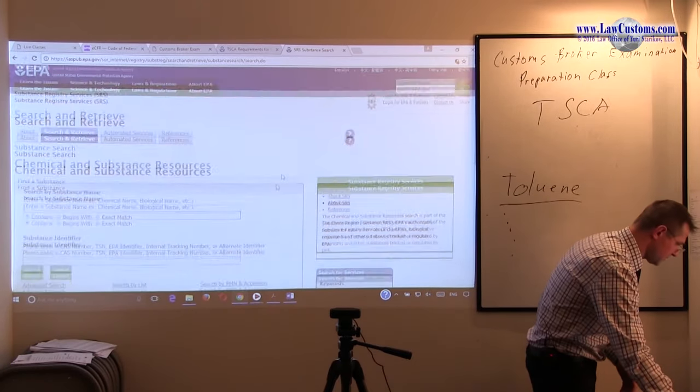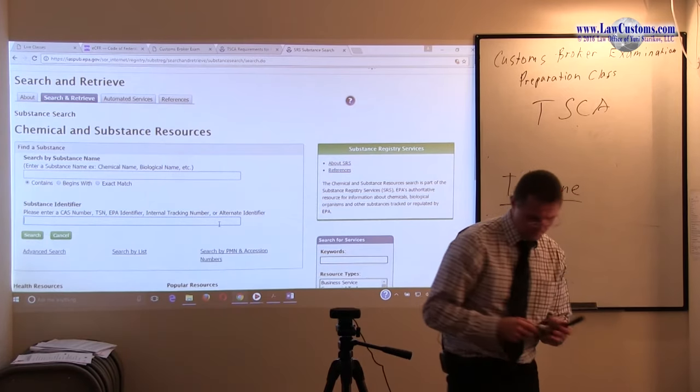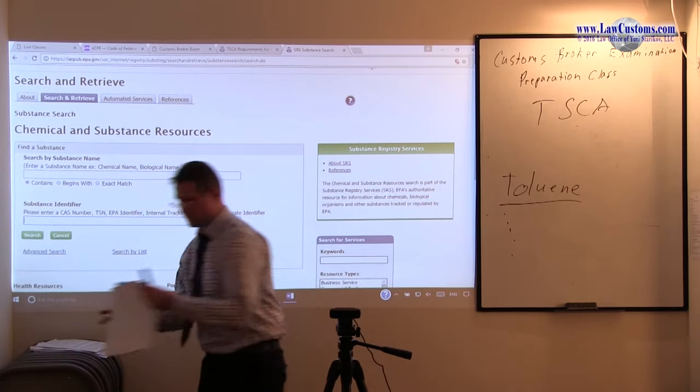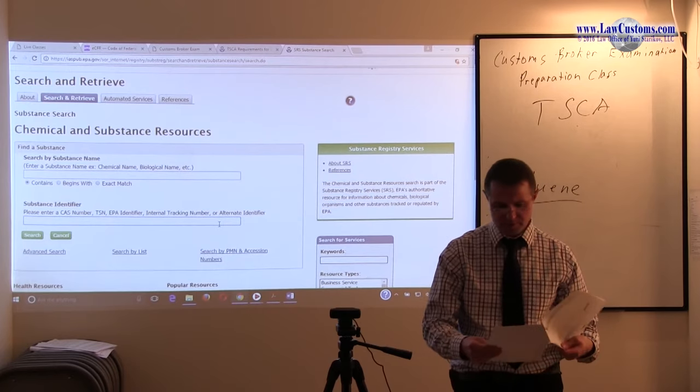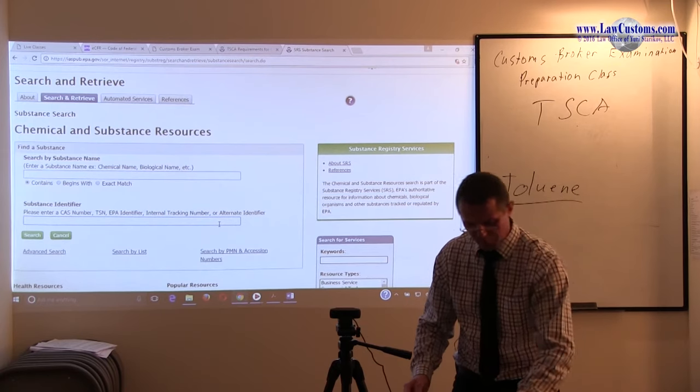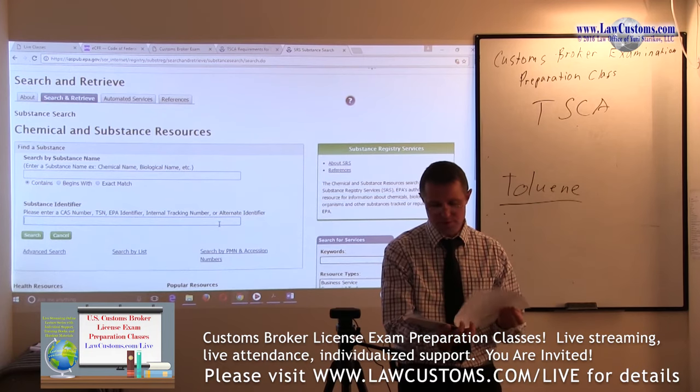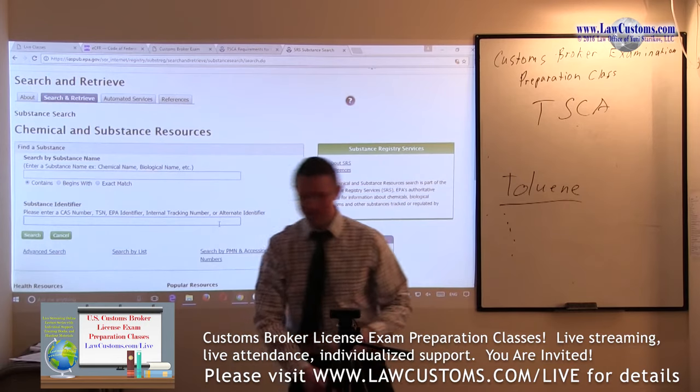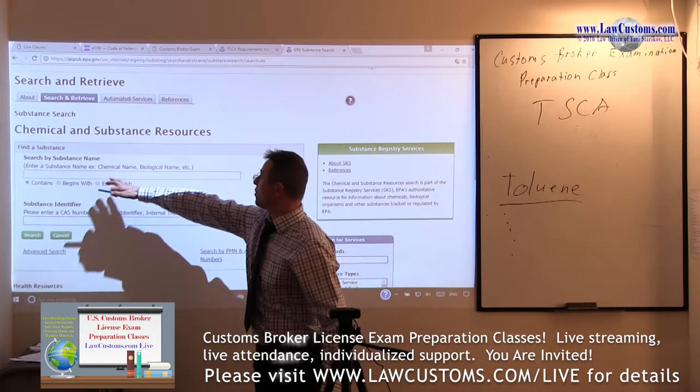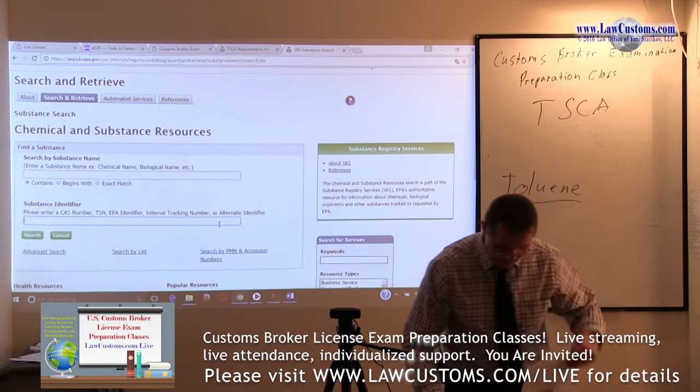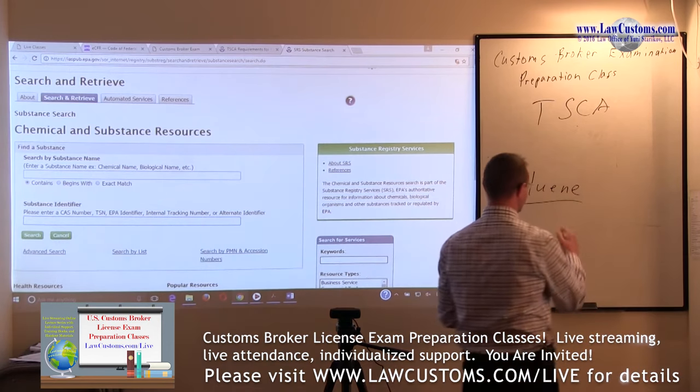This registry can include confidential information, but for the great majority of stuff it is available free to the public, and it has been available for quite some time. For example, if you are bringing in toluene, everything has its own CAS number.